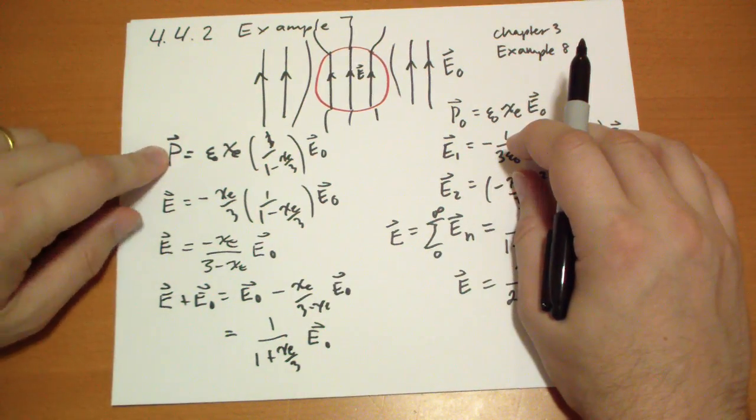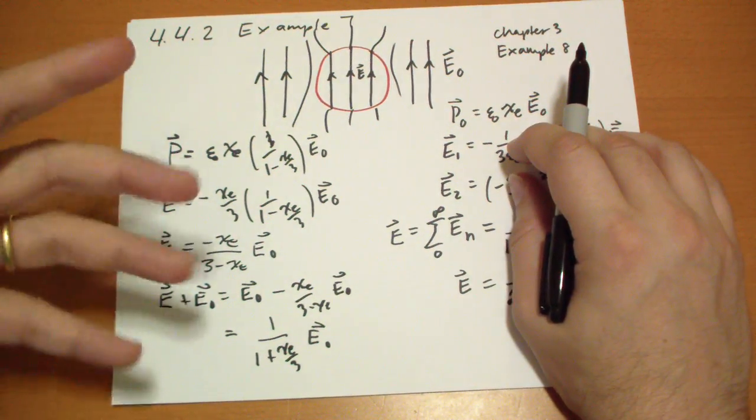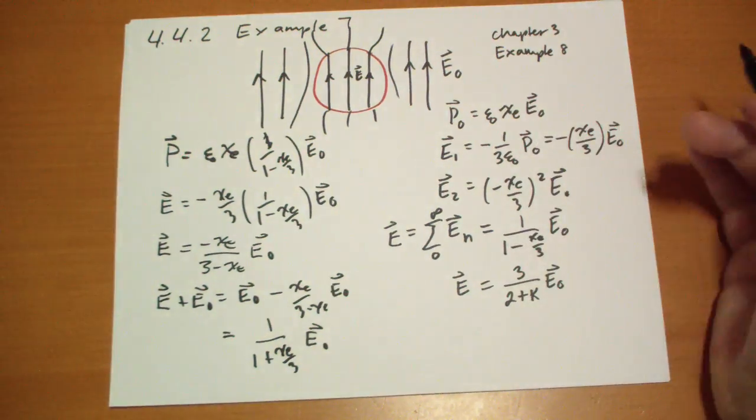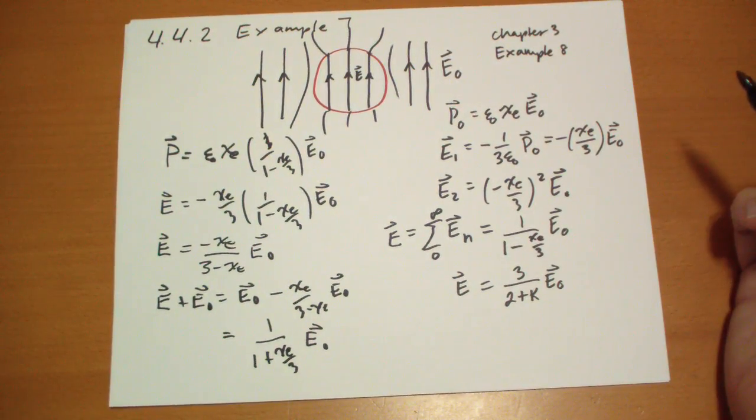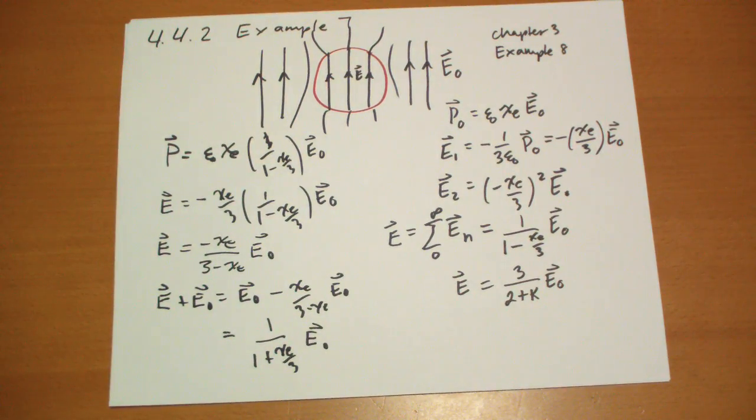So the resulting electric field from adding in additional polarization due to the electric field we just calculated is basically nothing. It doesn't amount to anything. So we've kind of reached a stabilization point where doing this additional times doesn't get you any different of an answer.